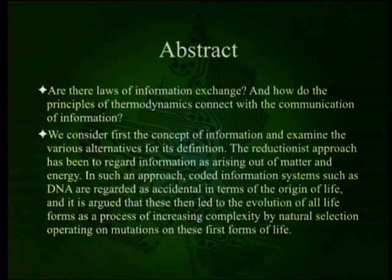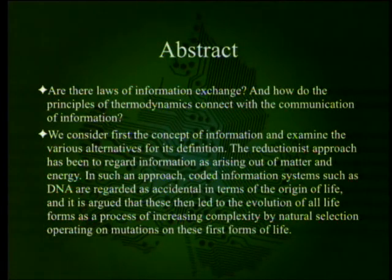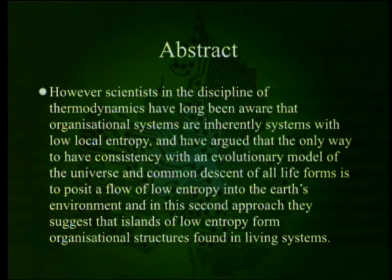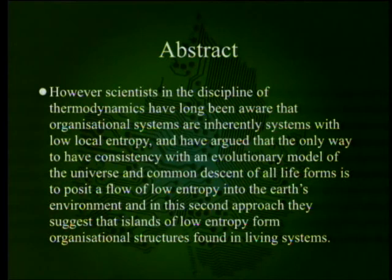McIntosh considers first the concept of information and examines various alternatives for its definition. The reductionist approach regards information as arising out of matter and energy, treating coded information systems such as DNA as accidental in terms of the origin of life, arguing these led to the evolution of all life forms by natural selection operating on mutations. However, scientists in thermodynamics have long recognized that organizational systems are inherently low local entropy, arguing that a flow of low entropy into Earth's environment is needed.